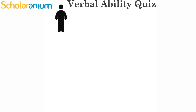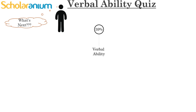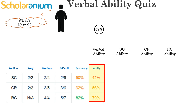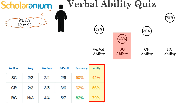So you've taken a verbal ability quiz and got your verbal ability score. What do you do next? The first thing you do is compare the SC, CR, and RC ability scores and find the section that you're weakest in. In this example, SC is the weakest section, so this is the first section you should focus on.